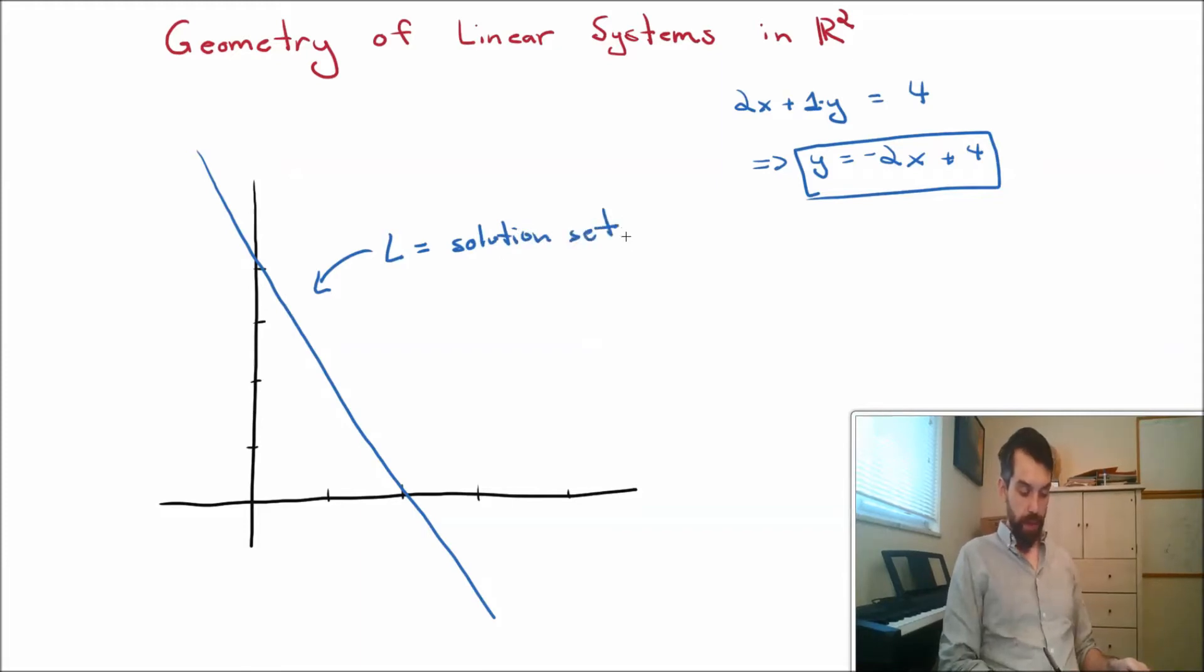In other words, if I'm in two dimensions, if I'm in R2, so there's two different variables, and I have just a single linear equation, it would appear to be that the solution to that equation is going to be a line.